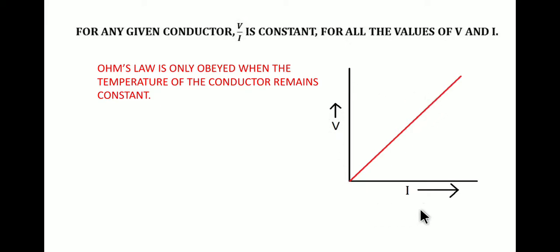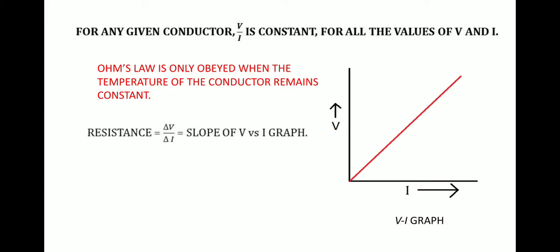For any given conductor, the resistance remains constant only if the temperature and other physical quantities remain constant. We can say that resistance equals ΔV by ΔI. ΔV and ΔI represent the change in voltage and change in current, and this ratio represents the slope of the V versus I graph.